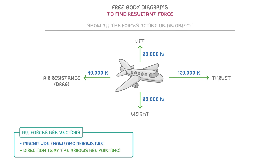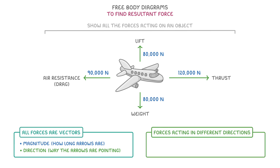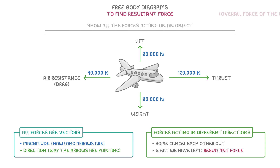Now because all these forces are acting in different directions, some of them are going to cancel each other out. And once we've taken that into account, what we'd have left is the resultant force, which we can describe as the overall force on an object.